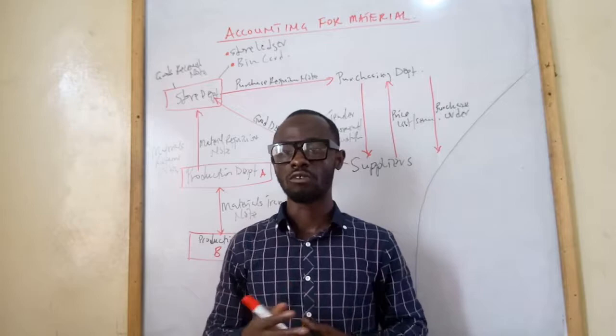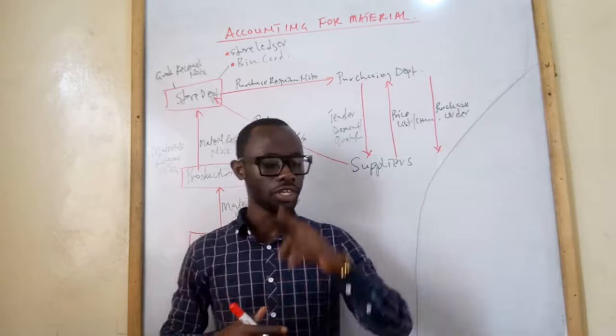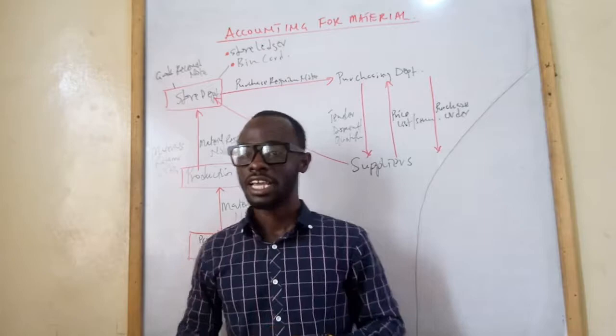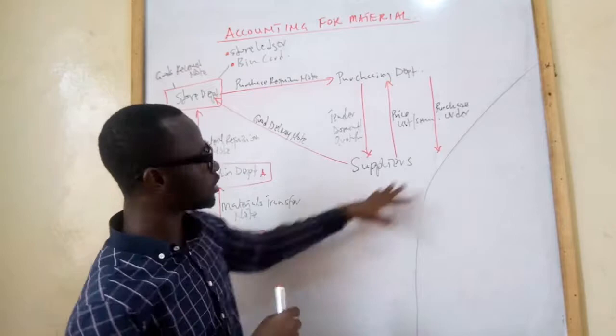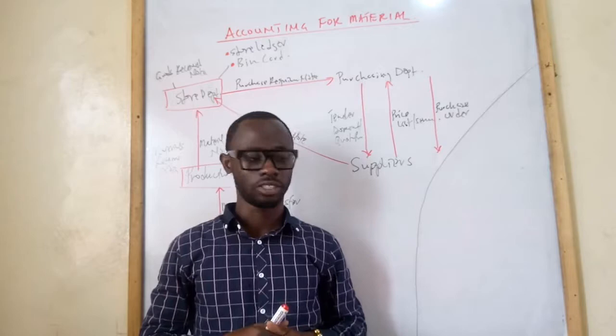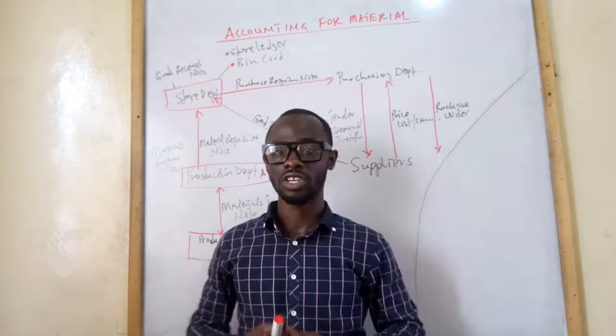In the purchasing and issuing of material, there are about nine documents we must understand. I have put these in a diagram showing the various departments or parties involved and how each document is used in relation to purchasing, issuing and receipt of inventories into the store.